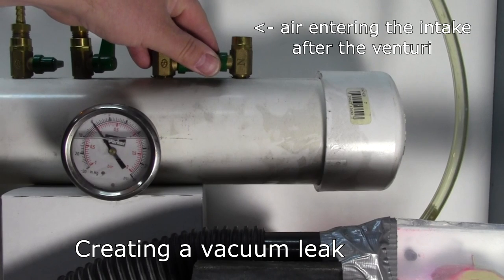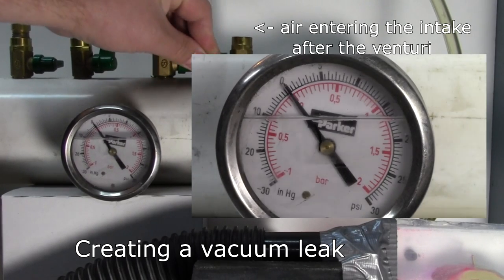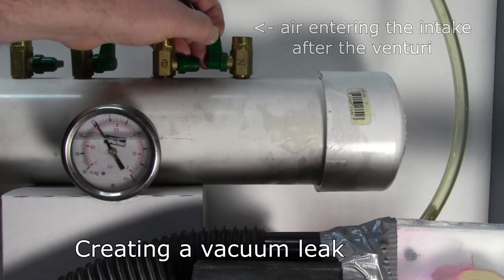Here we are creating a vacuum leak, and you can see the gauge move as we open and close the valve, letting air into and out of the chamber.